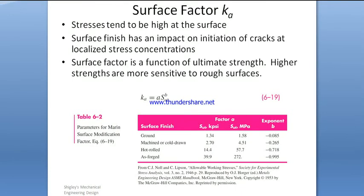The first endurance limit modifying factor is the surface factor Ka. Stress tends to be high at the surface, and the quality of the surface finish has an impact on the initiation of cracks at localized stress concentrations, which will amplify the applied stress.